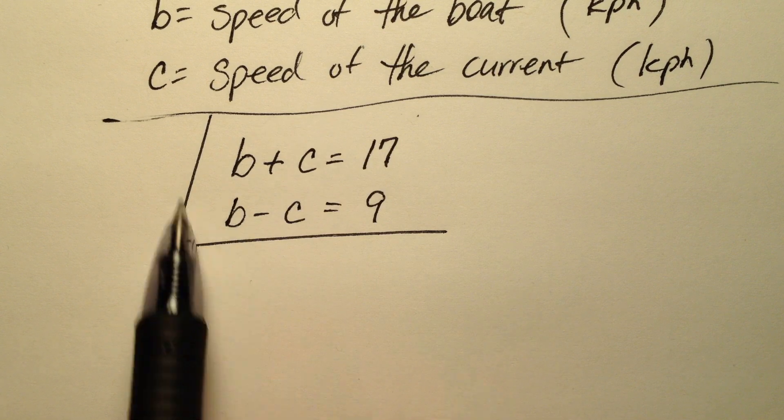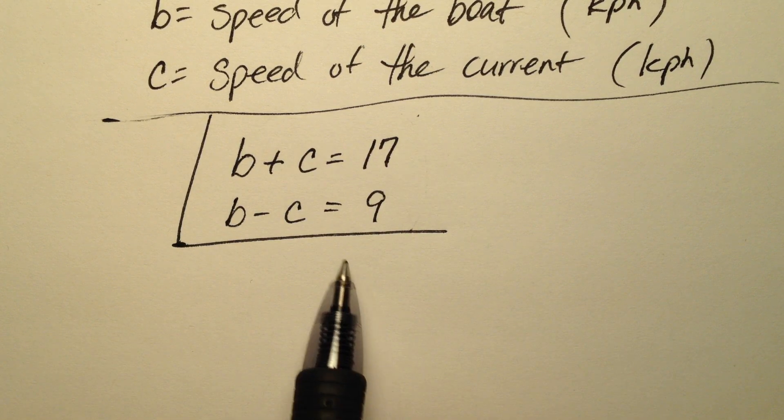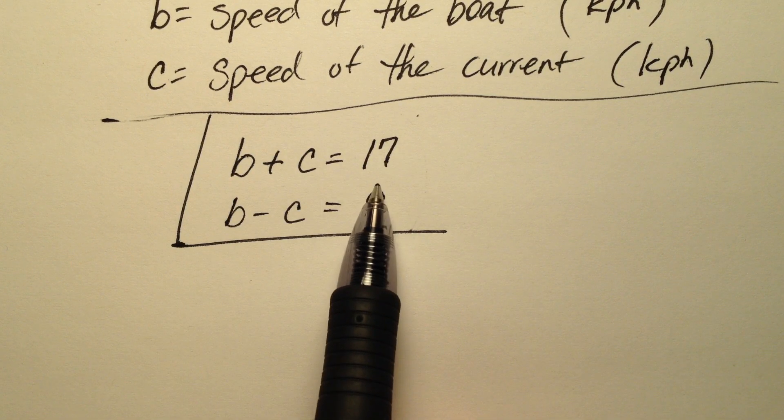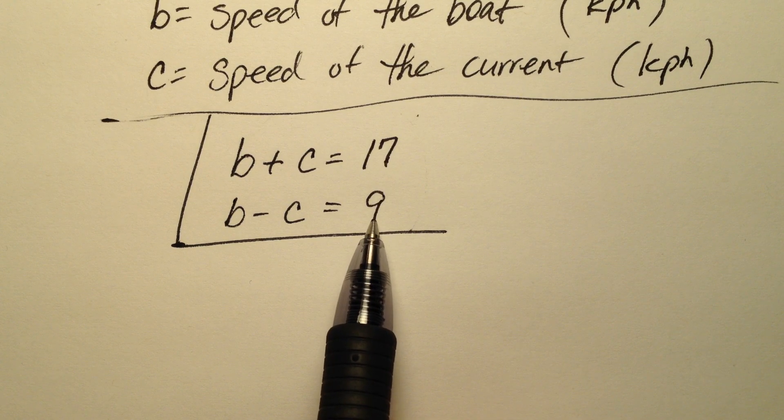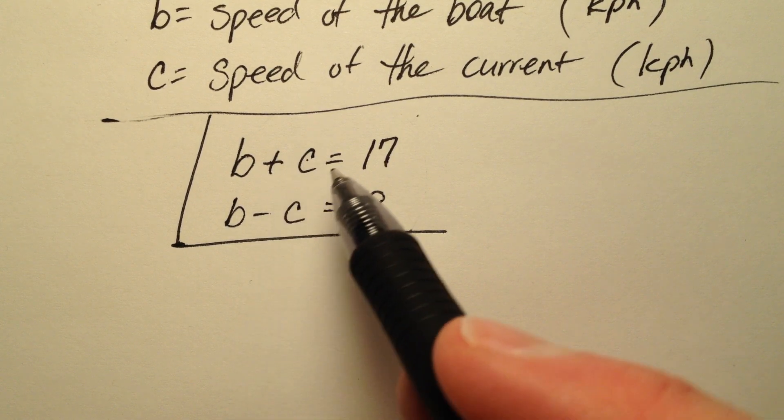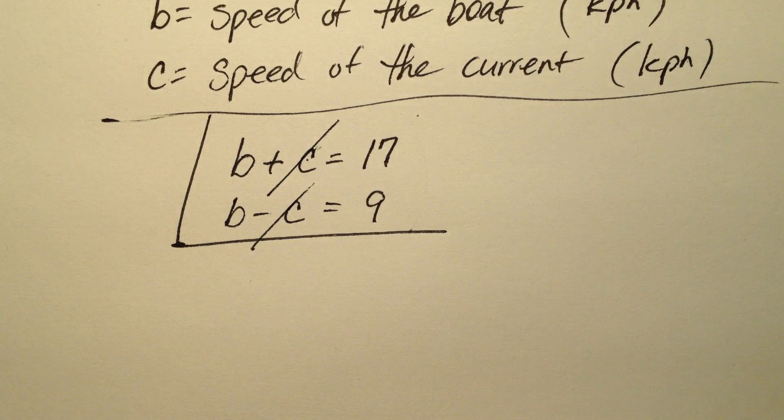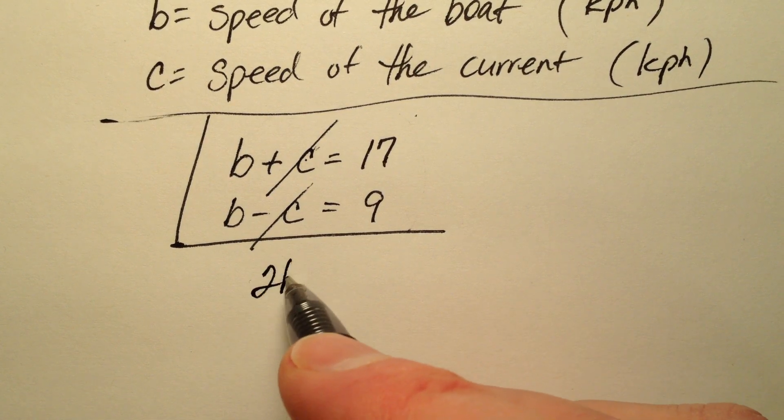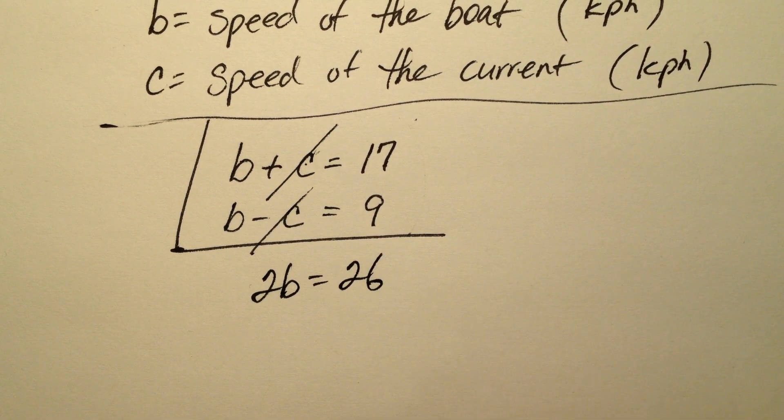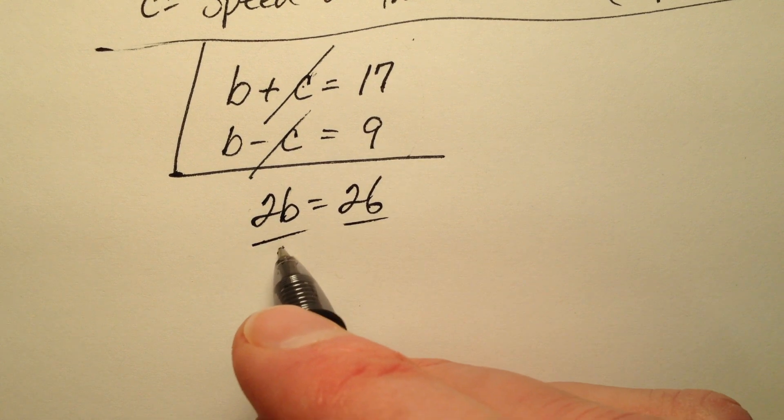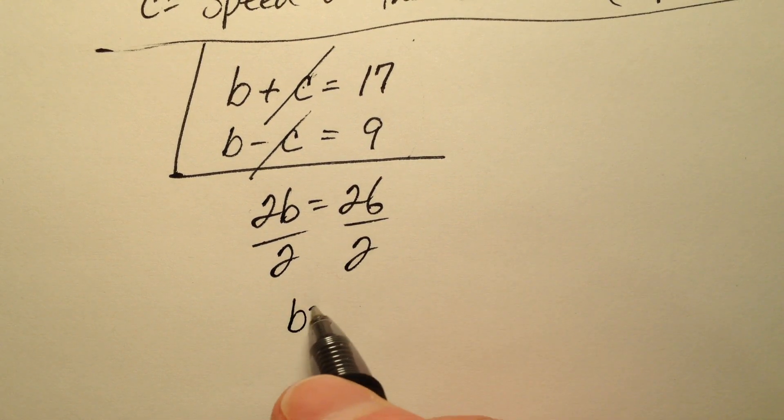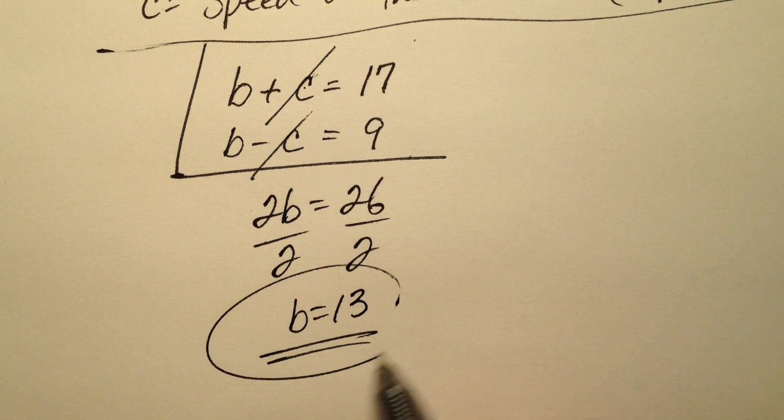So now that I have this system of equations, I need to solve it for values for b and c. And it looks like if I just add these two equations up the way they are, my plus c and my minus c are going to cancel each other out. So I'll have 2b equals 26. So when I divide both by 2, b looks like it's going to equal 13.